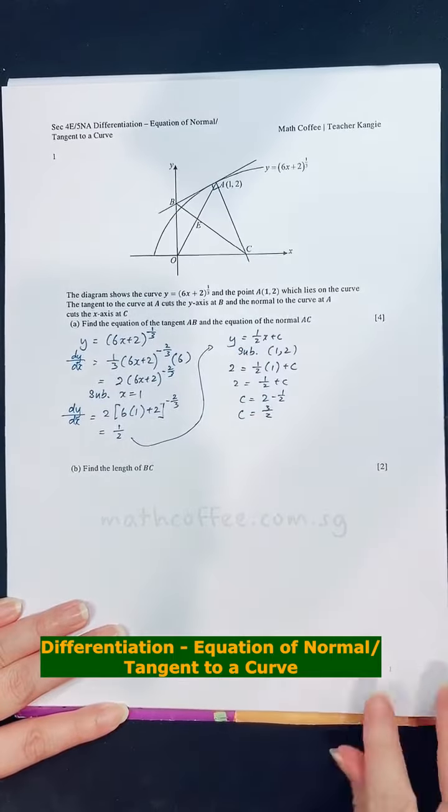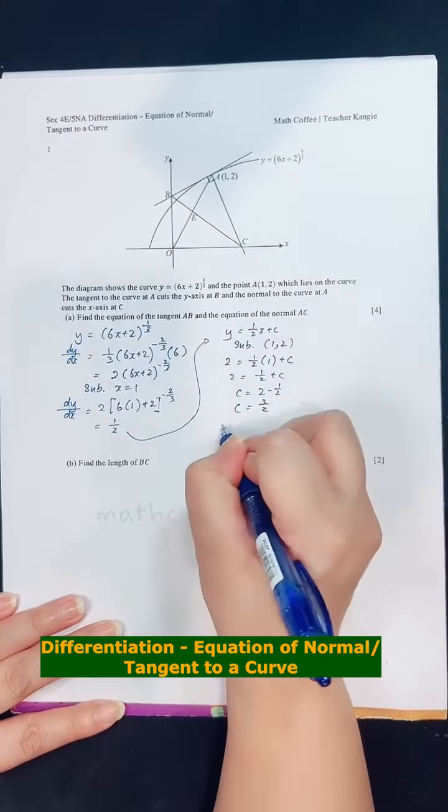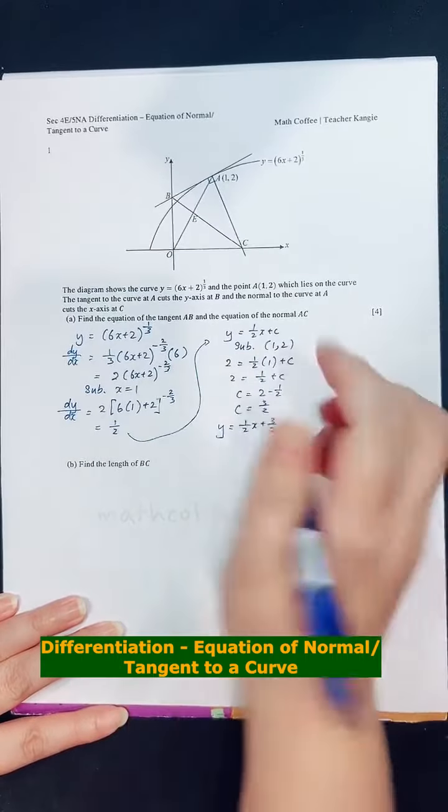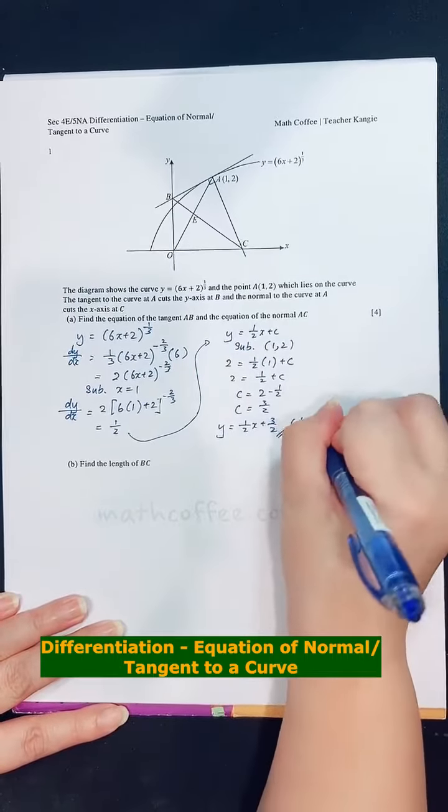c is equals to 3 over 2. Okay, so in the end, my equation of the tangent will be y equals to half x plus 3 over 2. So they asked to find equation of the tangent, which we already found. This is one of the answers, so just bracket this is the tangent.